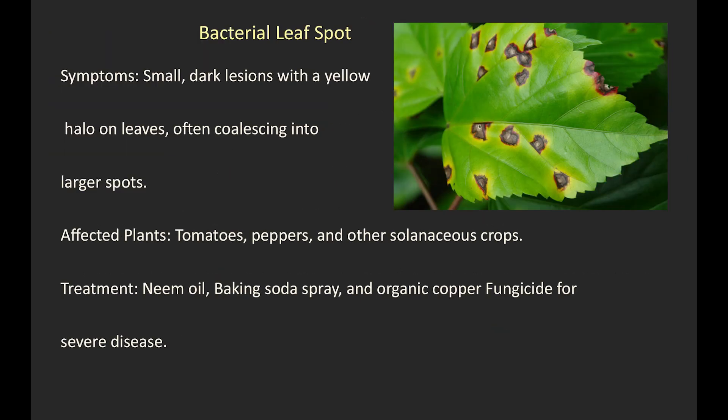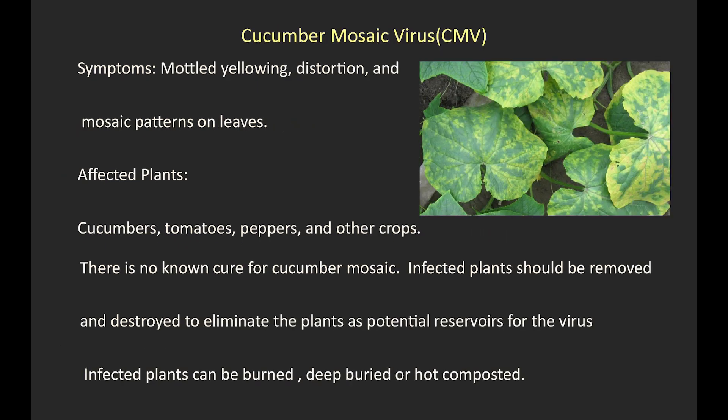7. Bacterial spot. Symptoms: small, dark lesions with a yellow halo on leaves, often coalescing into larger spots. Affected plants: tomatoes, peppers, and other solanaceous crops. Treatment: neem oil, baking soda spray, and organic copper fungicide for severe disease.